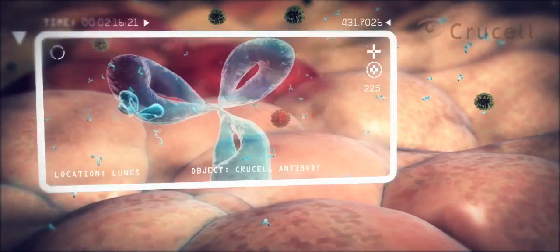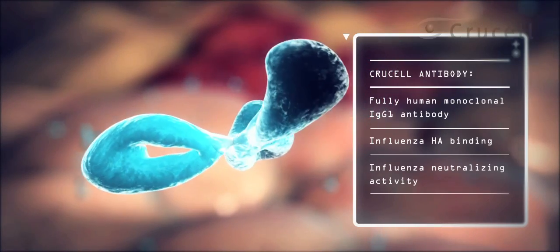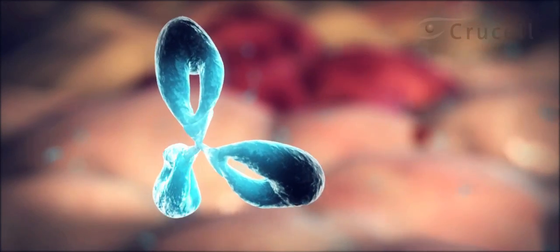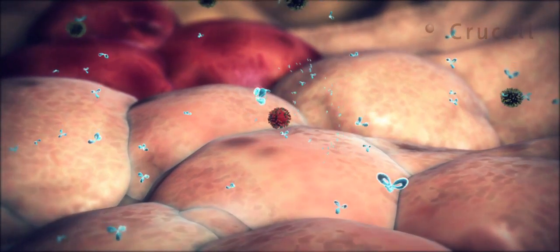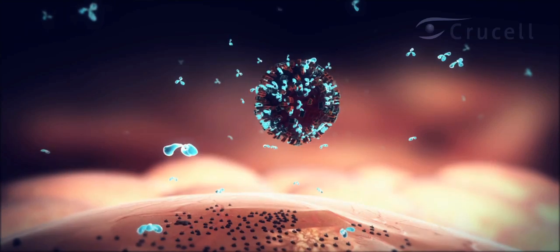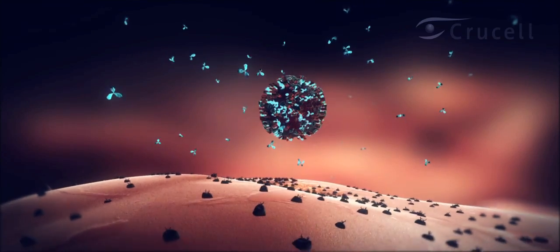To stop the influenza infection, Crucell researchers have discovered fully human monoclonal antibodies capable of neutralizing the virus. These antibodies specifically bind to the HA and are internalized together with the virus.